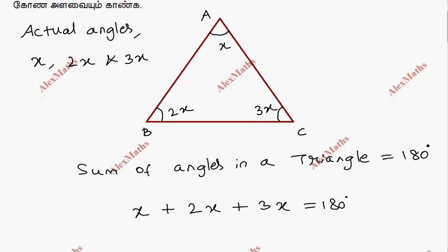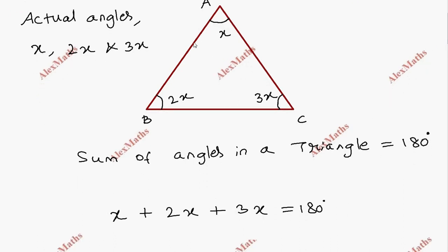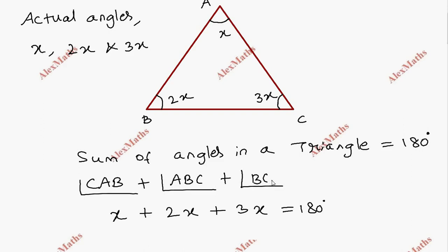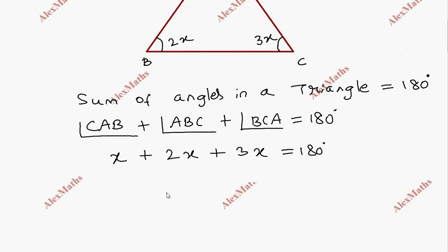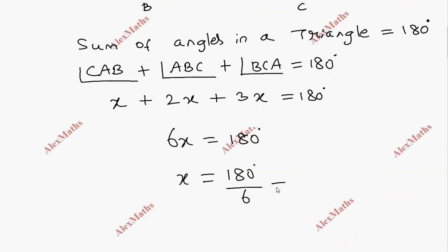We substitute x into the angles: angle CAB is x, angle ABC is 2x, and angle BCA is 3x. Adding them gives 6x equals 180 degrees, so x equals 180 divided by 6, which gives x equals 30 degrees.